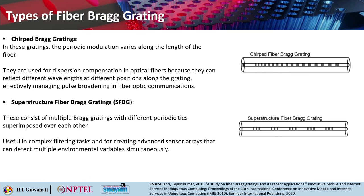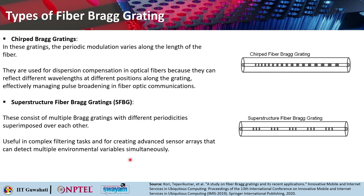Another type is the superstructure fiber Bragg grating, which consists of multiple Bragg gratings of different periodicities superimposed on each other. These are useful in complex filtering tasks and for creating advanced sensor arrays that can detect multiple environmental variables simultaneously — one grating catering to one variable and another to a different variable, making them multifunctional.